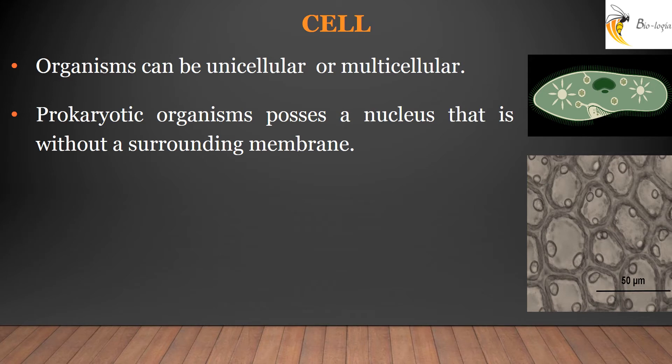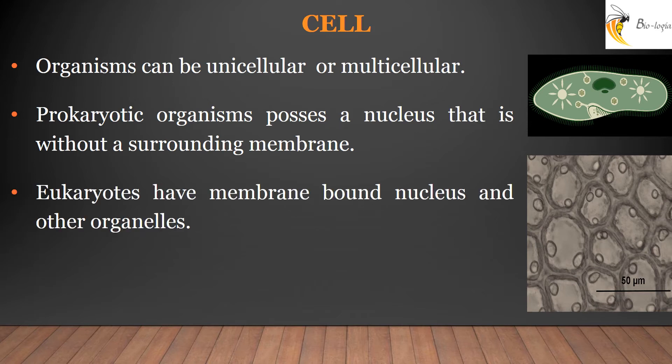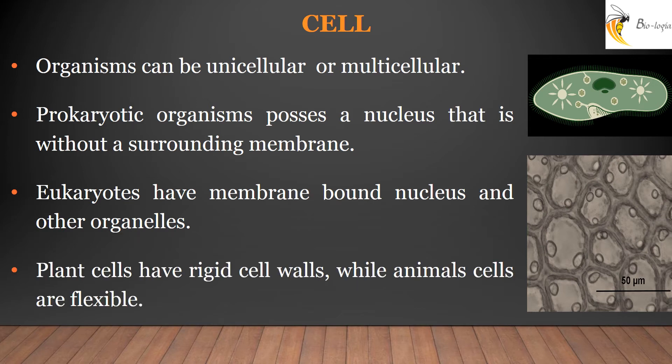Unicellular organisms like bacteria are called prokaryotes. They possess a nucleus which is not surrounded by any membrane. Eukaryotes like humans, plants, and birds have membrane-bound organelles. In the case of plant cells, the cell walls are rigid, whereas in animals, the cells are flexible.